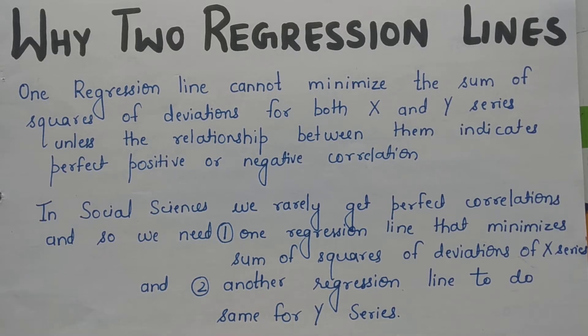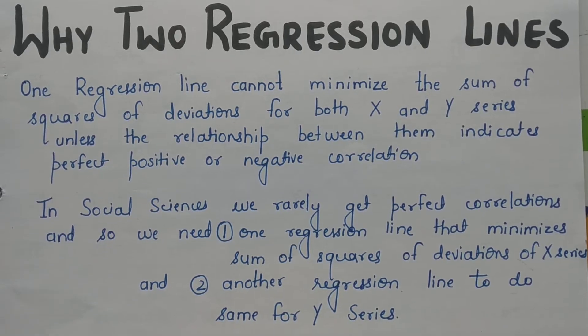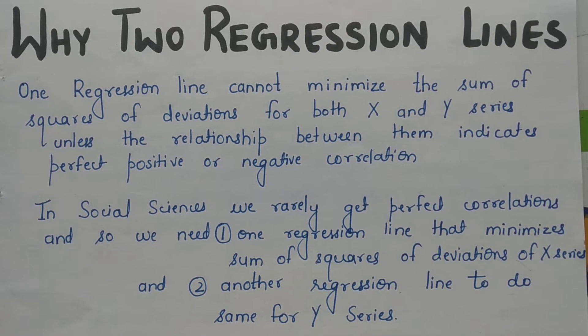So basically, the question is: why do we need two regression lines? This is a very important theoretical question from the examination point of view — why do we require two regression lines always?